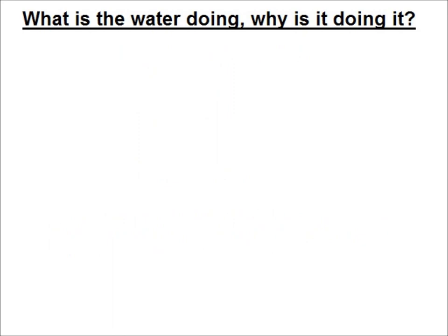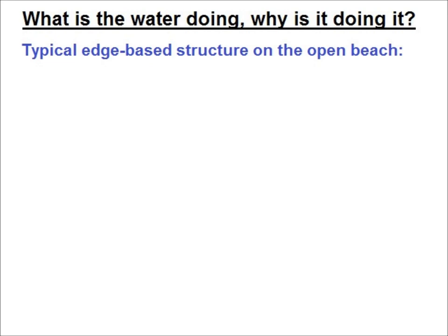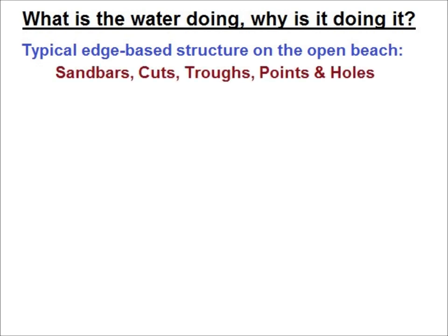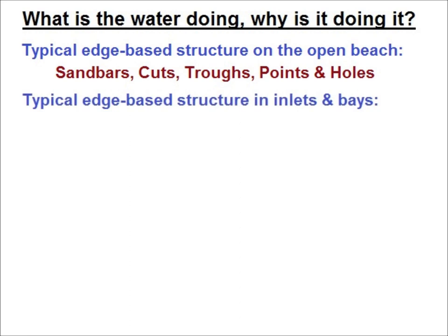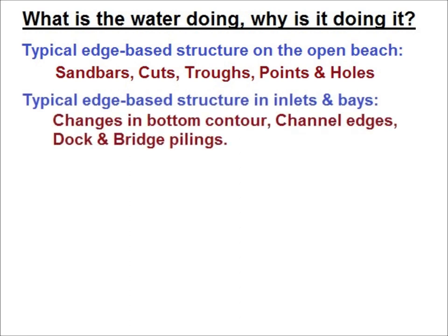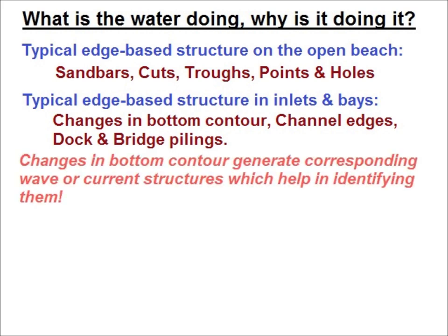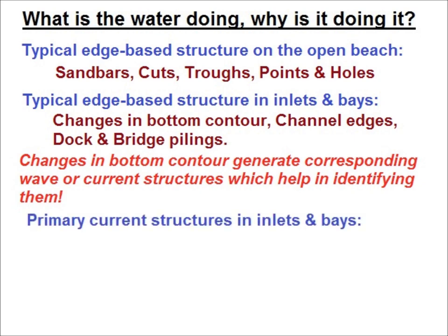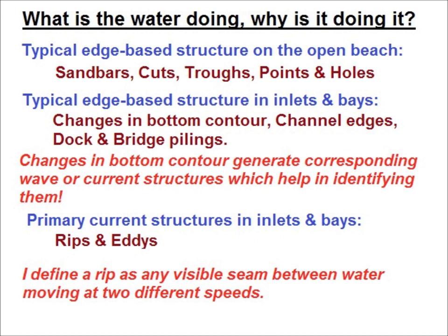When I approach any spot to fish, I look to see what the water is doing and why it is doing it. Typical edge-based physical structures I look for on the open beach are sandbars, cuts, troughs, points, and holes. In inlets and bays, it would be changes in bottom contour, channel edges, docks, and bridge pilings. Changes in bottom contour generate corresponding wave or current structures which help in identifying them. When fishing inlets and bays, the primary current structures I seek are rips and eddies — both tell you that something is happening with the bottom. I define a rip as any visible seam between water moving at two different speeds.